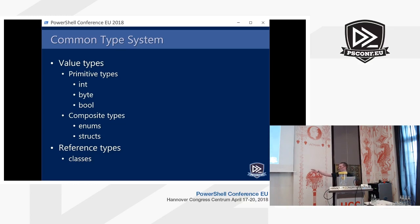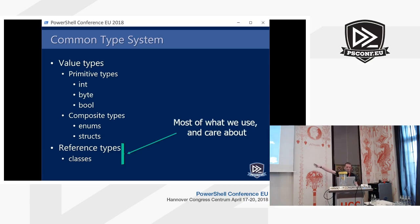The second sphere of the type system deals with what we call reference types — these are basically classes. These are the more complex types that we use to define business processes or types that extend the functionality of the primitive types. On this slide, value types take up a lot of space because we have primitive types and composite types, but most of what we use and care about is reference types — classes. Anything more complex than a number or a DateTime structure is usually a class.